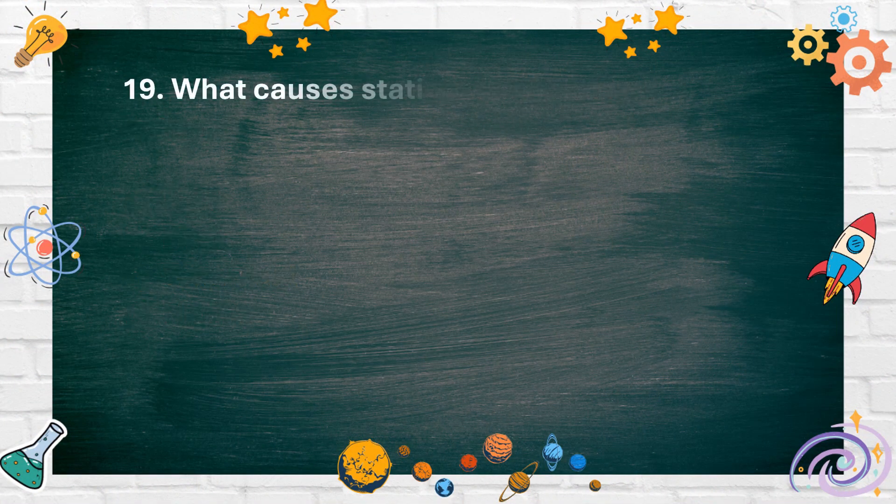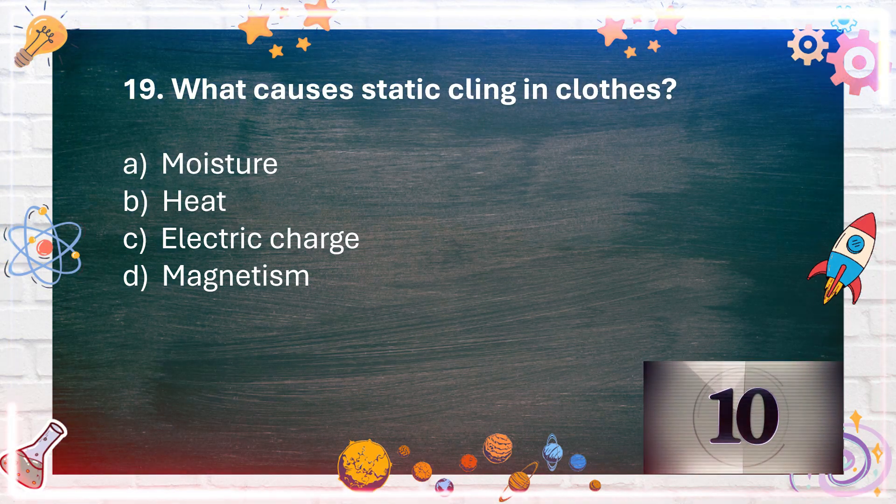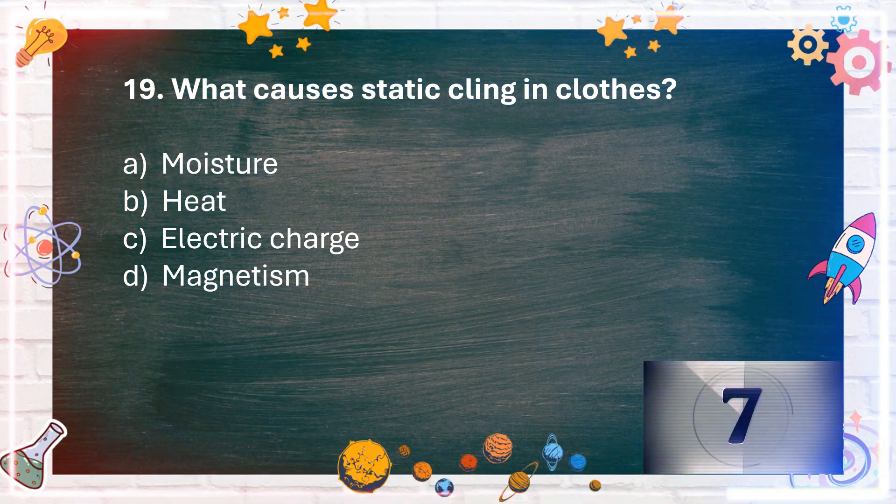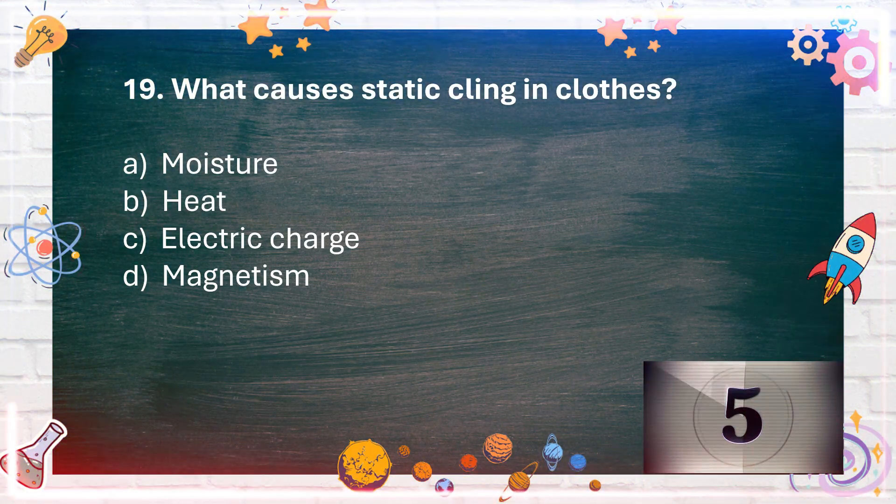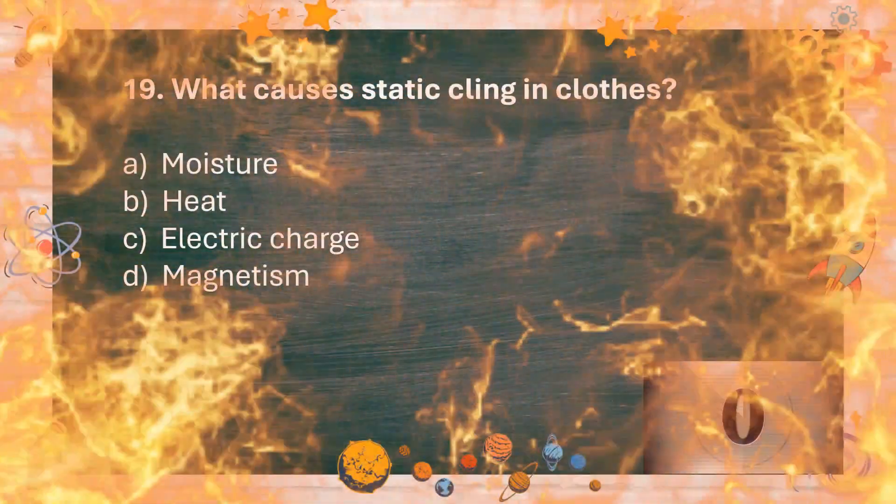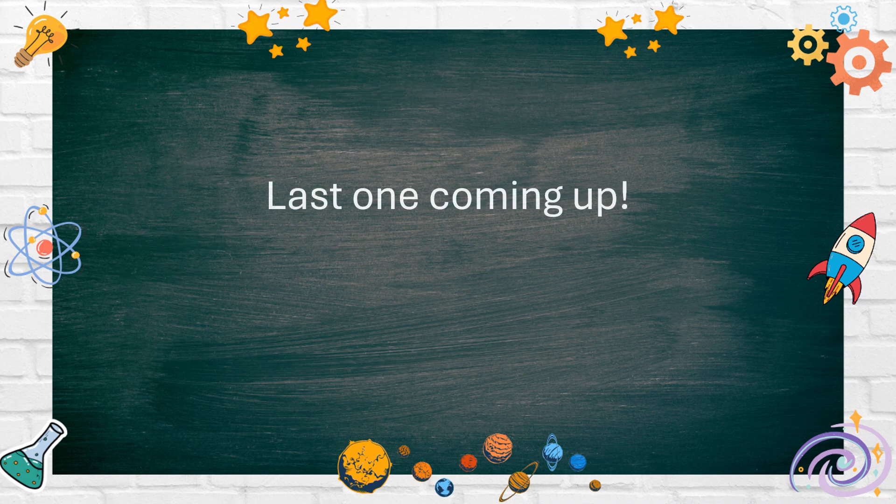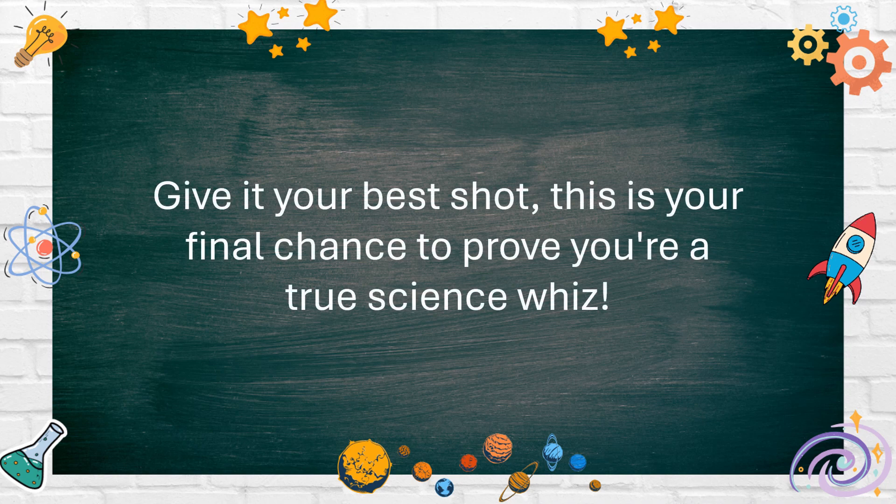Number 19: What causes static cling in clothes? A. Moisture. B. Heat. C. Electric charge. D. Magnetism. The answer is C. Electric charge. Last one coming up. Give it your best shot. This is your final chance to prove you're a true science whiz.